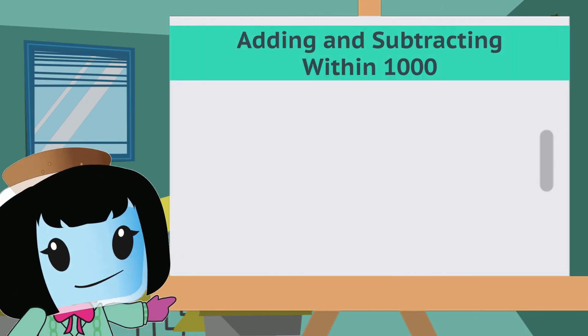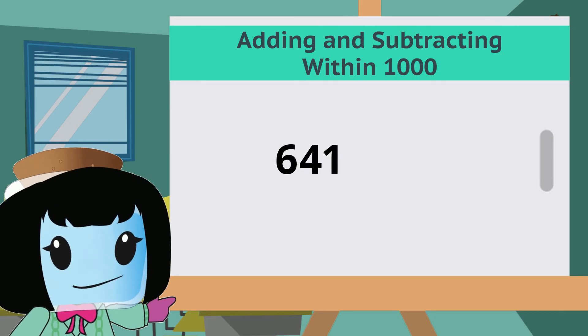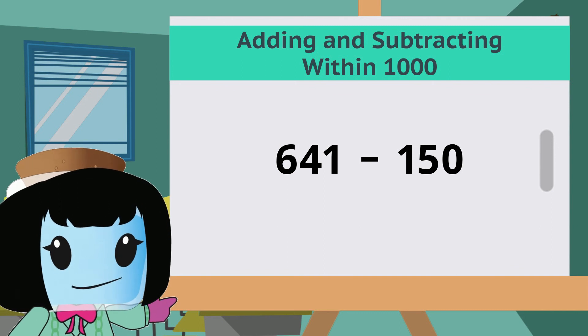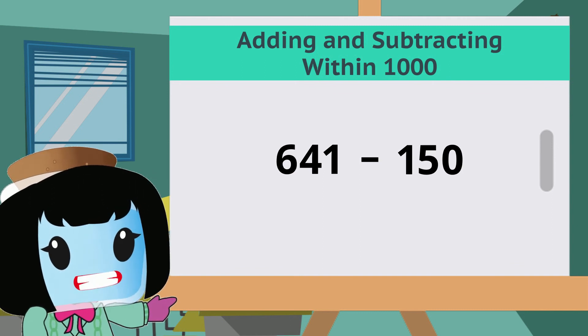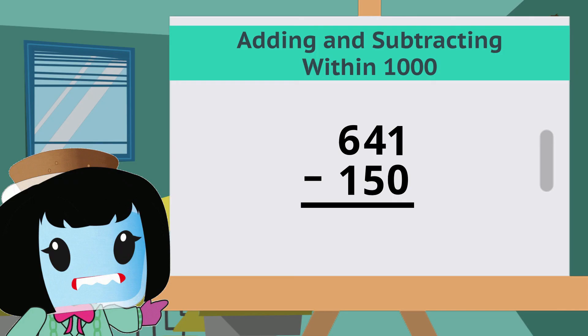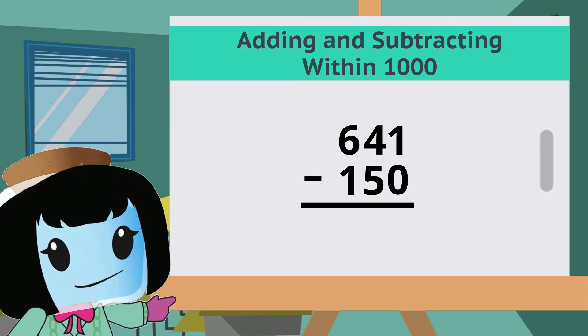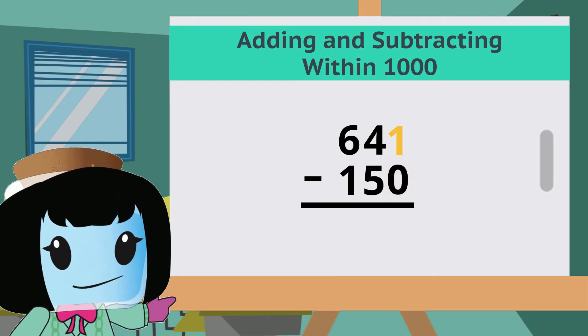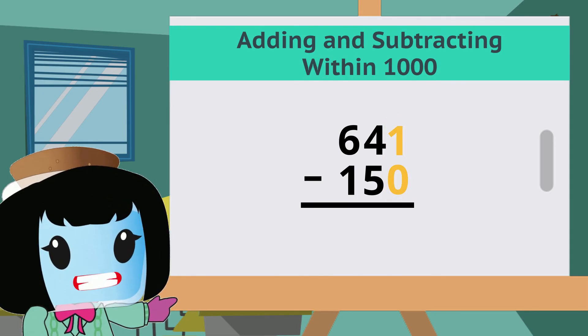Let's try subtraction this time. 641 minus 150. Place the two numbers in columns with matching place values. Start subtracting the ones column. 1 minus 0 equals 1.